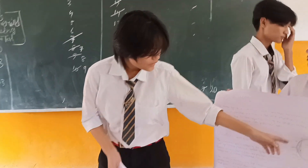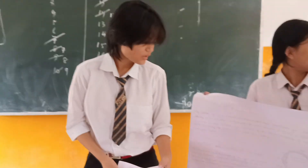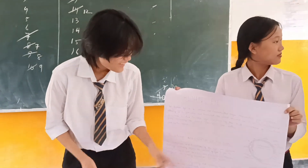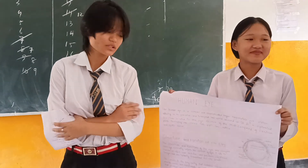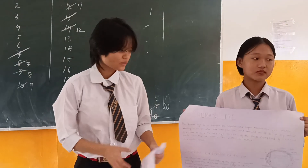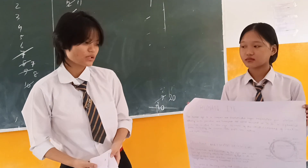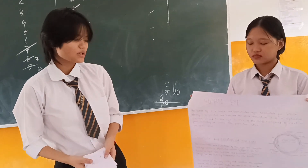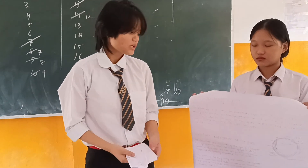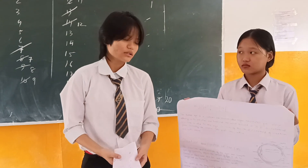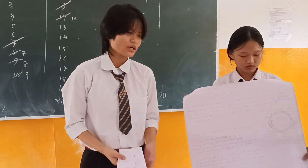The outer layer of the eye is called the cornea. It is white in color and transparent — transparent because it allows light to pass through. The cornea refracts light and also protects the inner part of the eye.